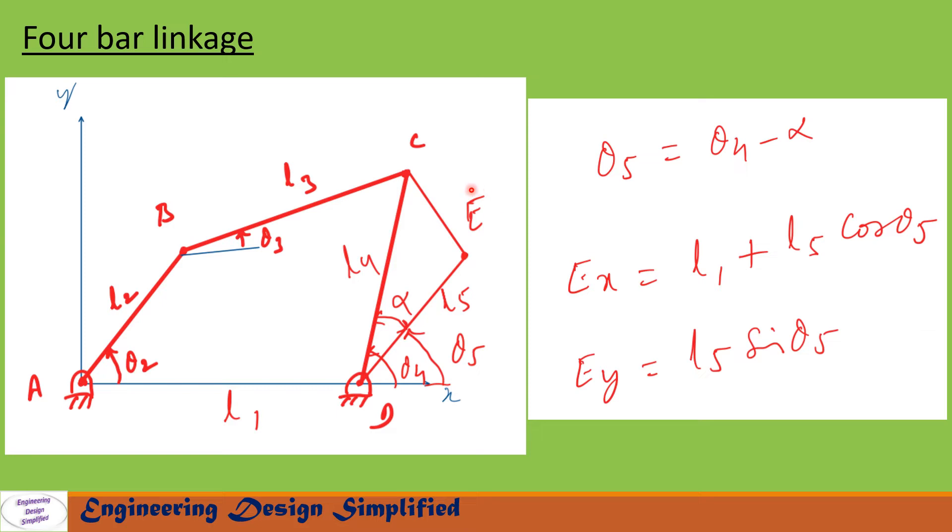Now, let us write the equation for X position of this E. EX equal to L1, that is the fixed link length, plus L5 cos theta5. Here we have used a plus sign. So cos theta5 in the second quadrant will become negative and in the first quadrant it is positive.